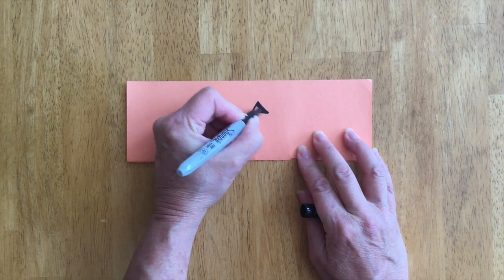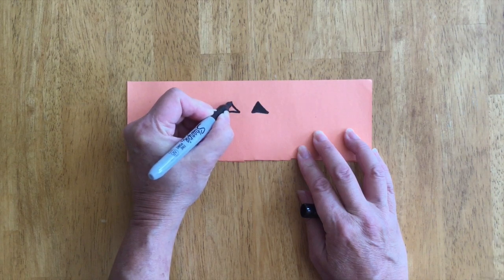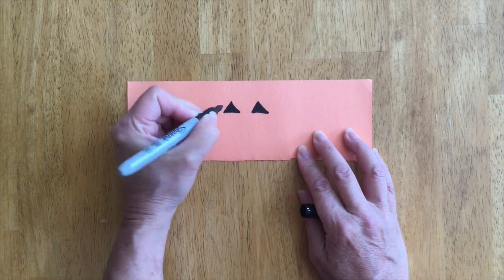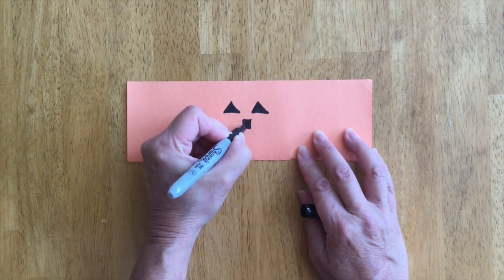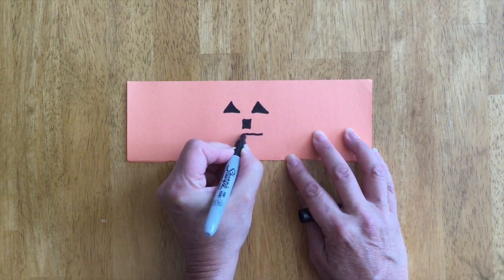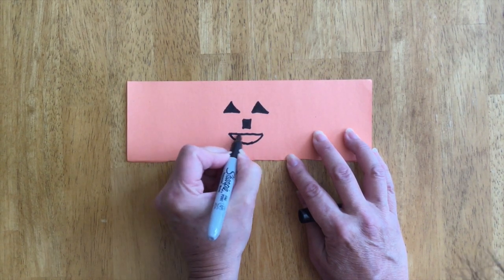You can use shapes like a triangle for his eyes, you could use like a square for his nose, and maybe a crescent like this or half circle for his mouth.